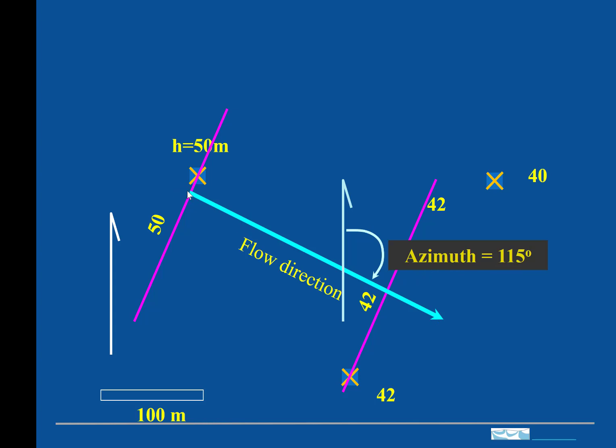Now the head gradient vector points in this direction. So the azimuth of that vector would be the angle that wraps all the way around there. So it would be 115 plus 180 degrees.